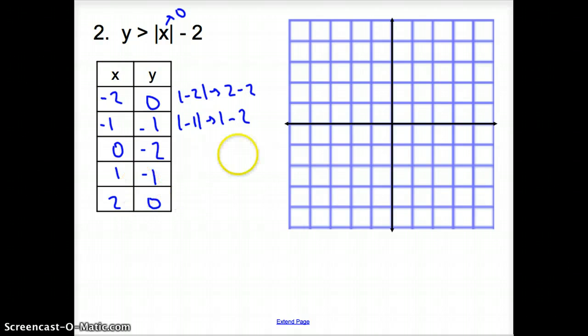So, let's go ahead and plot these points for our graph. Now, it's negative 2 at 0. Negative 1, down 1. 0, negative 2. 1, negative 1. 2, 0. So, now we have a V look to our graph, a V shape to our graph. Since it's an absolute value, we know we graphed our points right.